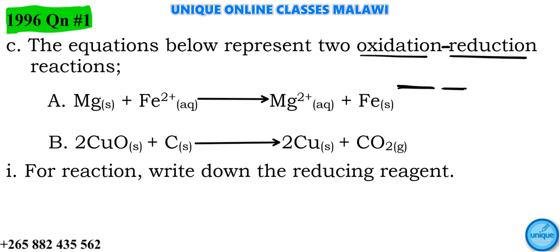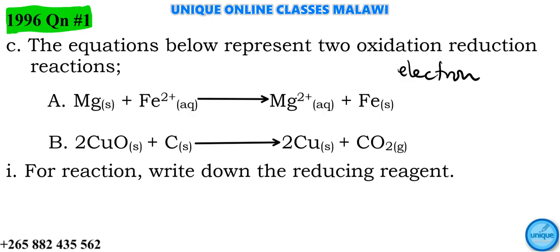Oxidation and reduction can be defined in terms of hydrogen, in terms of oxidation number, or in terms of electrons. In terms of electrons, oxidation is defined as the losing of electrons, whereas reduction is the gaining of electrons.